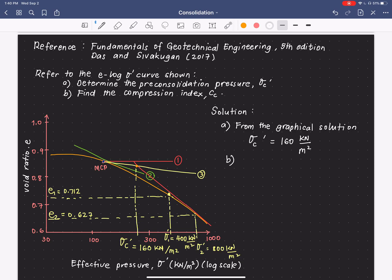Okay, so, from this data, let me just write, for a pressure of 400 kilonewton per square meter, we have a void ratio of 0.712. And for a pressure, which is equivalent to 800 kilonewton per square meter, we have a void ratio of 0.627.